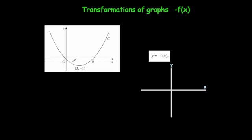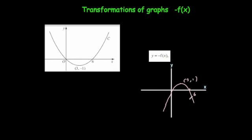The two x-intercepts stay the same, so it still crosses at 0 and at 6. The minimum point was at (3, -1) — it'll now be at (3, 1) because it's reflected, so 3 across and 1 up. The overall shape of the graph will be flipped over, and that's it — we've reflected the graph in the x-axis using the transformation y equals minus f of x.